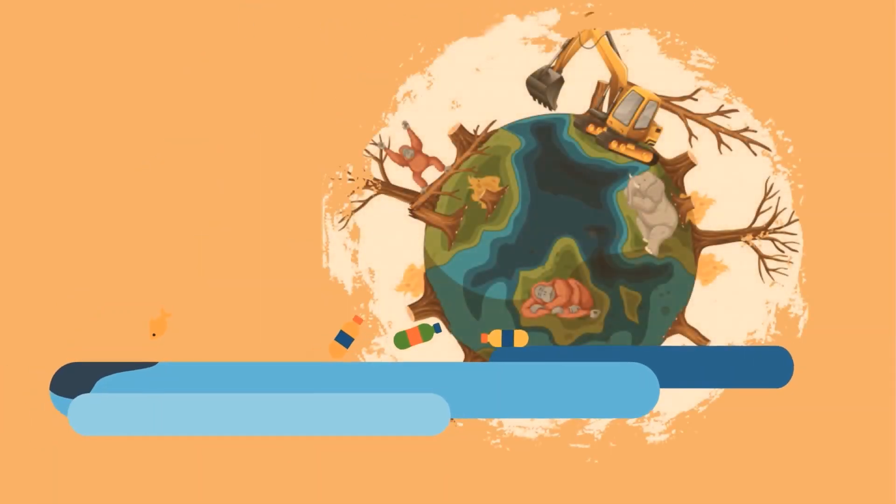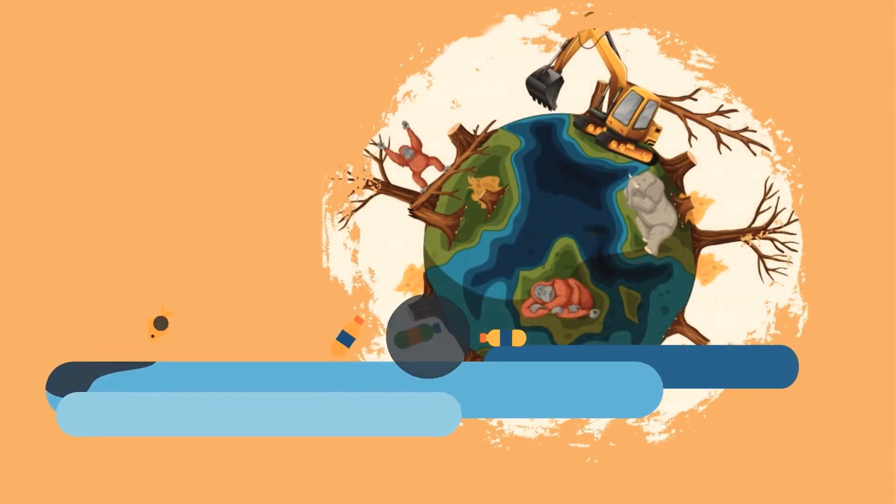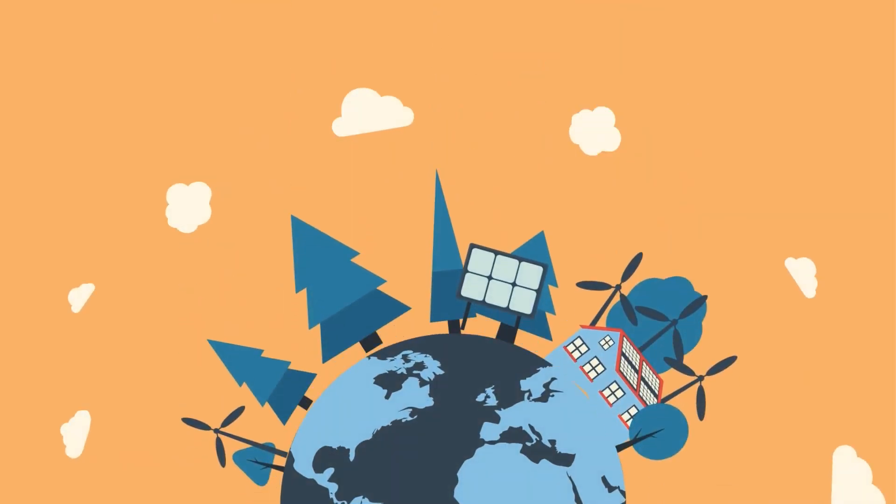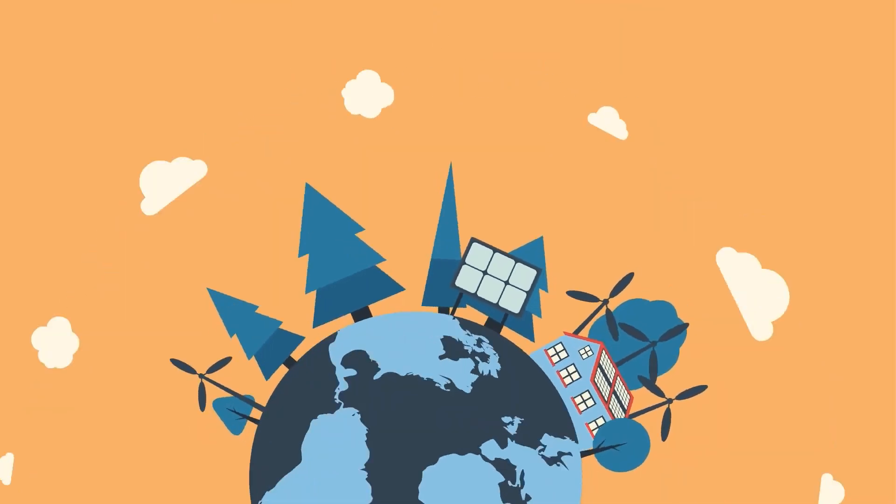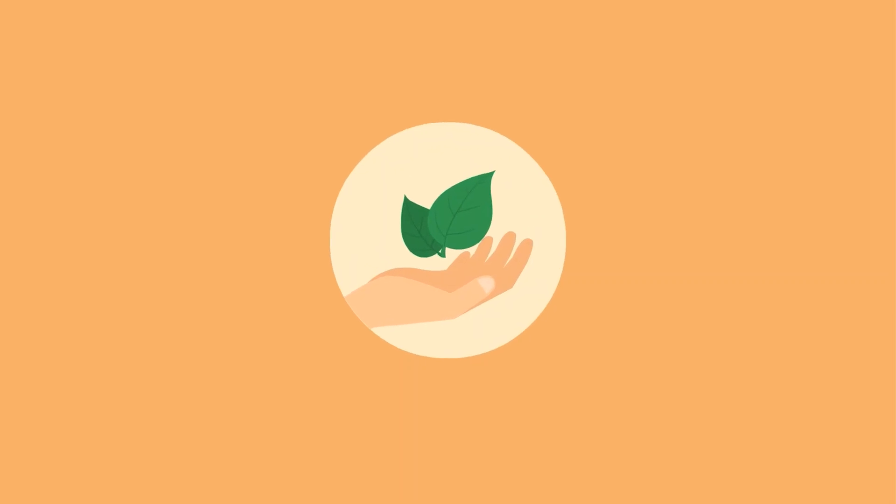Deforestation is another contributing factor. Forests remove and store carbon dioxide from the atmosphere. Cutting them down means that CO2 builds up quicker since there are no trees to absorb it. Not only that, but trees release the carbon they stored when we burn them. Humans have increased atmospheric CO2 concentration by 47% since the Industrial Revolution began. Today, there is more carbon dioxide in the atmosphere than there ever has been in the past 800,000 years.